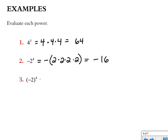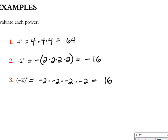In example 3, I have the entire quantity negative 2 being multiplied by itself 4 times. So negative 2 times negative 2 times negative 2 times negative 2. A negative times a negative times a negative times a negative gives a positive answer, so this answer is positive 16.